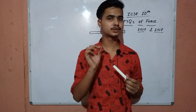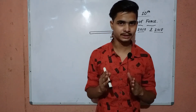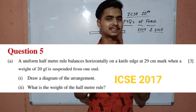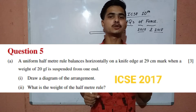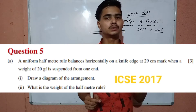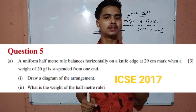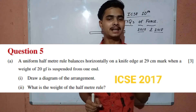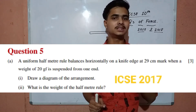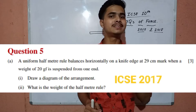Here is the first question — the 2017 question presenting in front of your screen. The question is: a uniform half meter rule has a knife edge placed at the 29 centimeter mark, and there is a weight of 20 gram force placed at one end. First, draw the diagram of the arrangement, and second, find out the weight of the half meter rule. This is the 2017 question — give it a try first.